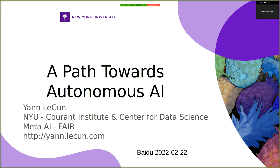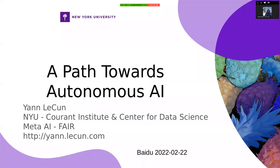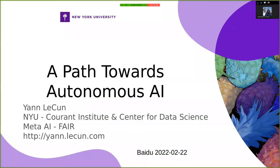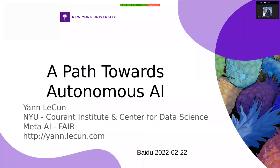This is a new talk with some new material. I've been asking myself a question for several years: what would be the architecture of an autonomous AI system? Taking things from first principles — what would such an architecture look like?